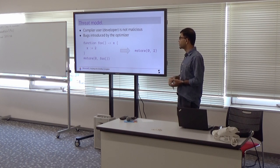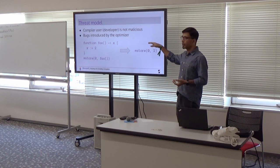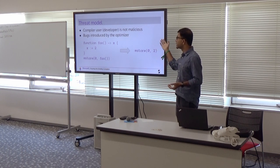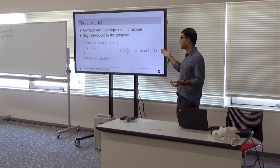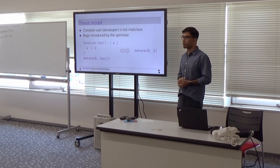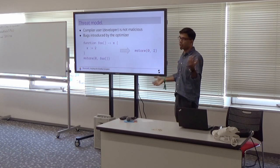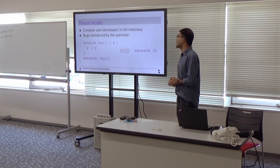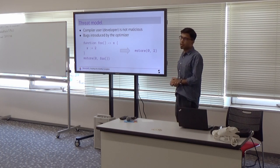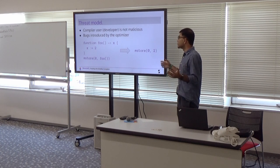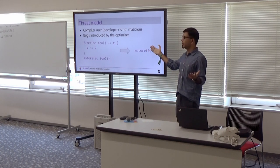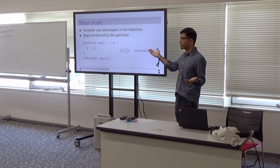For example, if you have a function, this is a Yule style program. Essentially it's defining function foo which returns x and setting that x to 2, and it's storing at location 0 in the memory the value returned by foo. So essentially you expect this to store the value 2 in location 0.